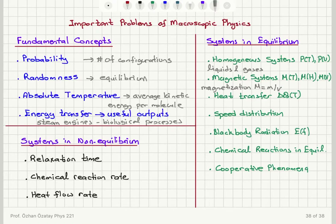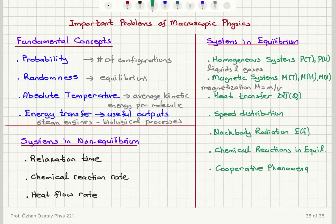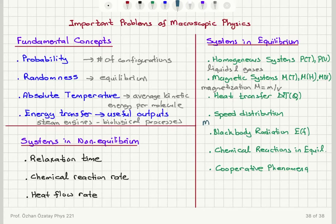Another macroscopic parameter is absolute temperature, which we can measure. We would like to know how the temperature changes as a function of the heat absorbed — so as a result of heat transfer, how we can describe temperature change. Also, the speed distribution within the molecules of a gas — that's the Maxwell distribution.